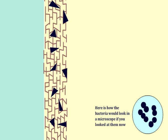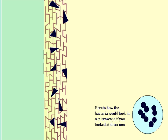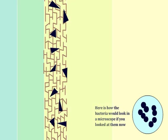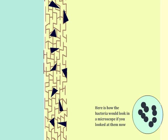The slide is now rinsed with a decolorizing agent, an acetone alcohol solution. However, the crystal violet iodine complexes are not washed out of the thick and tortuous layers of the gram-positive cell wall, and the organisms remain dark blue in color.